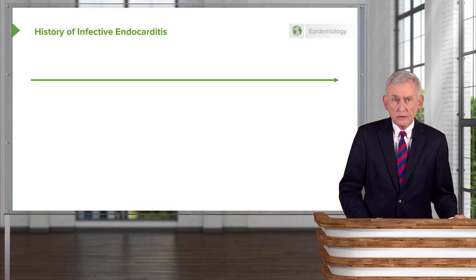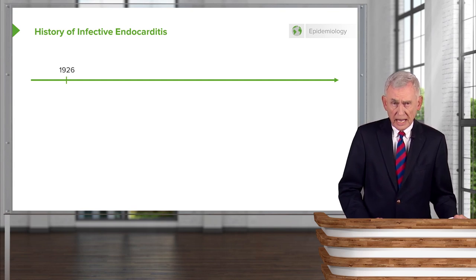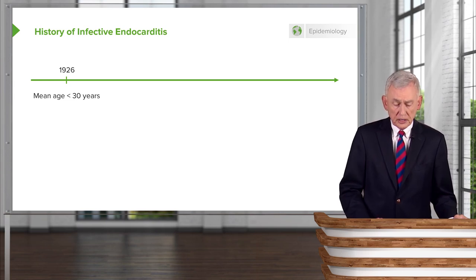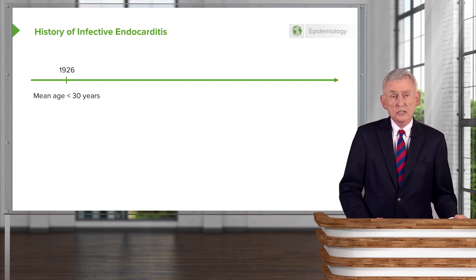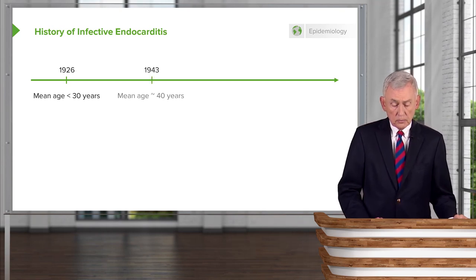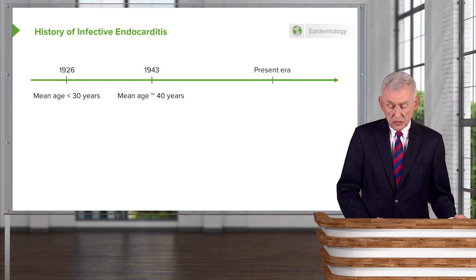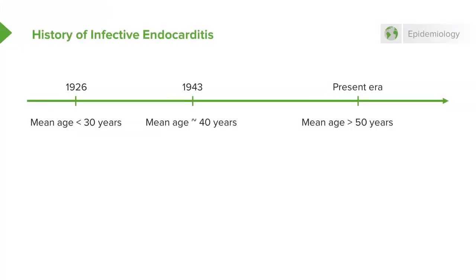It's worthwhile to give an overview of the history of infective endocarditis because it has changed in the era of modern medicine. Back in the 1920s, the mean age of a person getting infective endocarditis was less than 30 years, reflecting congenital heart disease and rheumatic fever. It had moved up to about 40 years in the 1940s. But in the present era, the mean age of a person getting infection of their heart valve is over 50 years.